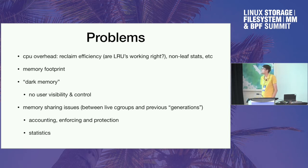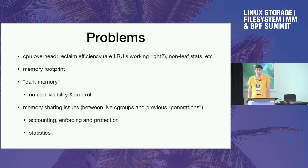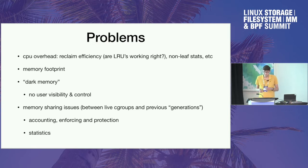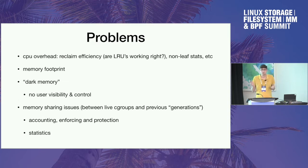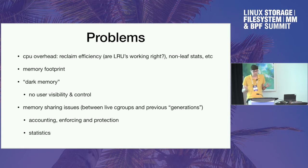The most obvious cost is CPU overhead during memory reclaim. We traverse the cgroup tree, and dying cgroups are no different from live ones — so if we have thousands of dying cgroups, reclaim becomes more CPU-costly. The second problem is memory footprint. Memory cgroups are large objects; on modern servers, depending on CPU count and NUMA nodes, they can be hundreds of kilobytes each. With thousands of them, you're wasting several hundred megabytes to gigabytes of memory.